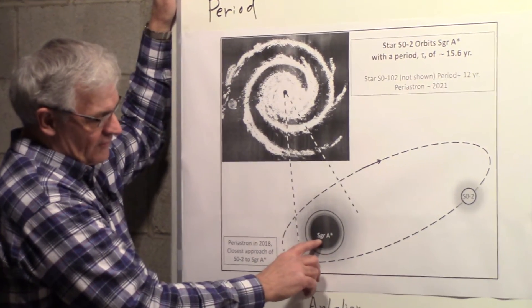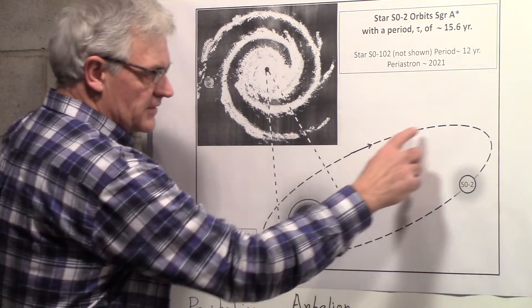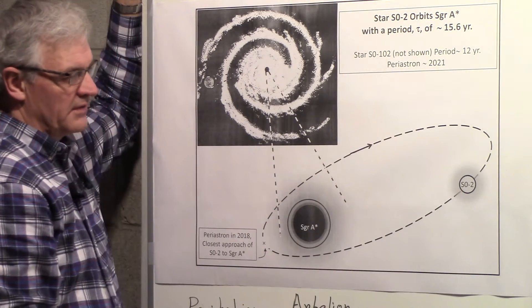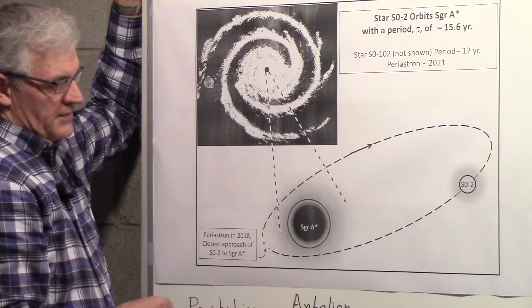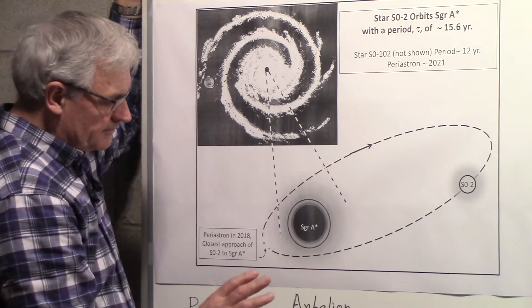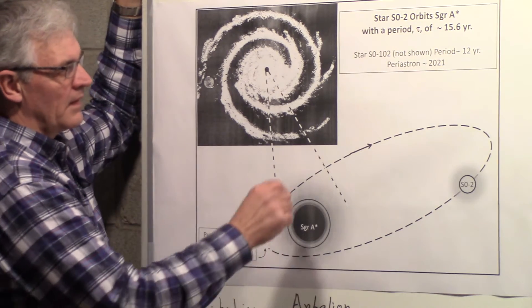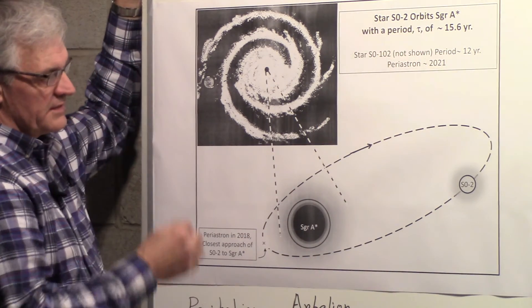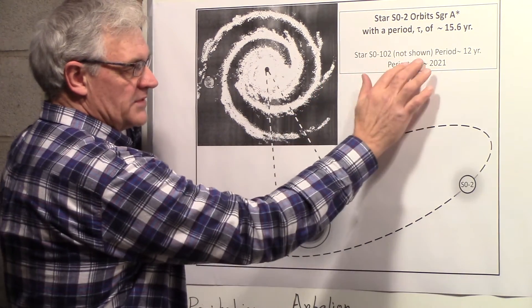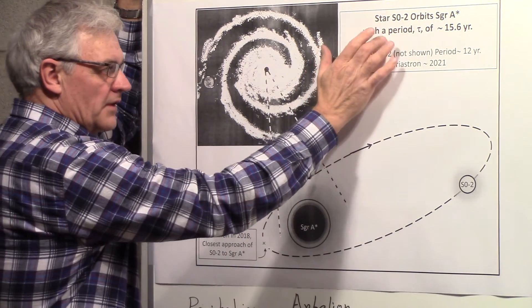We're going to take a close look at this area here: Sagittarius A*, the supermassive black hole abbreviated as Sgr A*. Here we're sketching the orbit of a star known as S02, another name for that star is just S2. That star is orbiting Sagittarius A* with a period of 15.6 years.